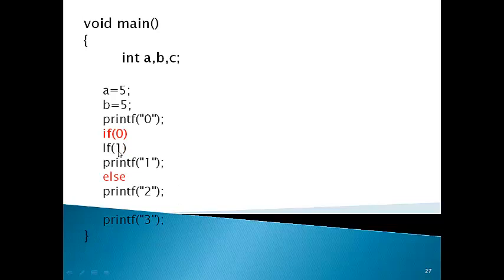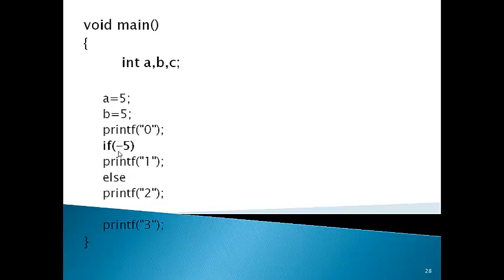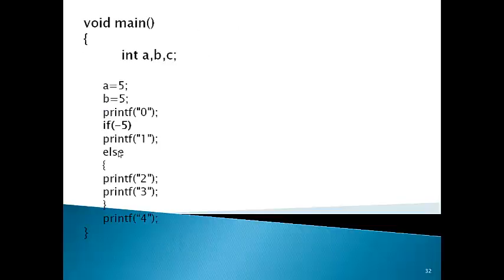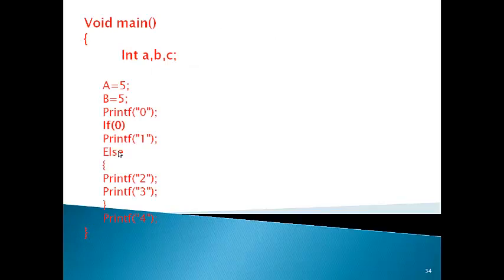So with minus 5 (non-zero, true): if body executes — output 0, 1, and 3, else is skipped. Now if the if body has only one statement (print 1) and else has two statements (print 2 and 3 — both depending on else): if condition is true, only 1 is printed from the if body, and 2 and 3 (else body) are skipped. So output is 0, 1, and 4. Now if we write 0 in the condition — 0 means false — the if-dependent statement will not execute, and output will be 0, 2, 3, and 4.